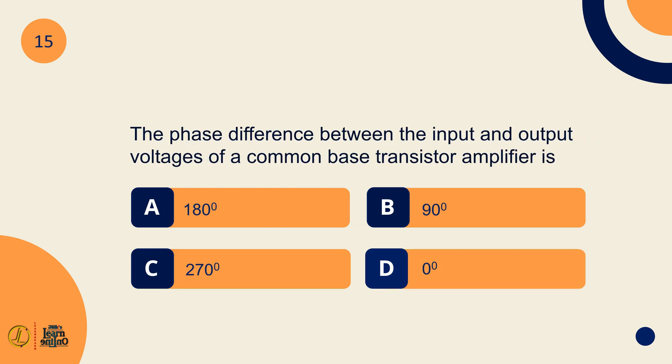The phase difference between the input and output voltages of a common base transistor amplifier is zero degree.